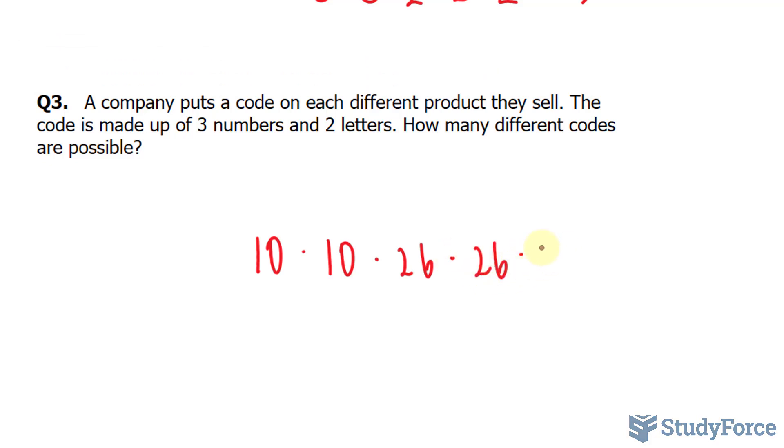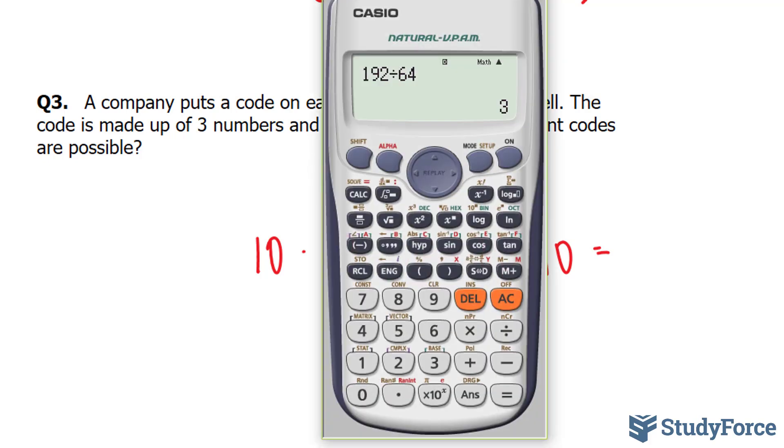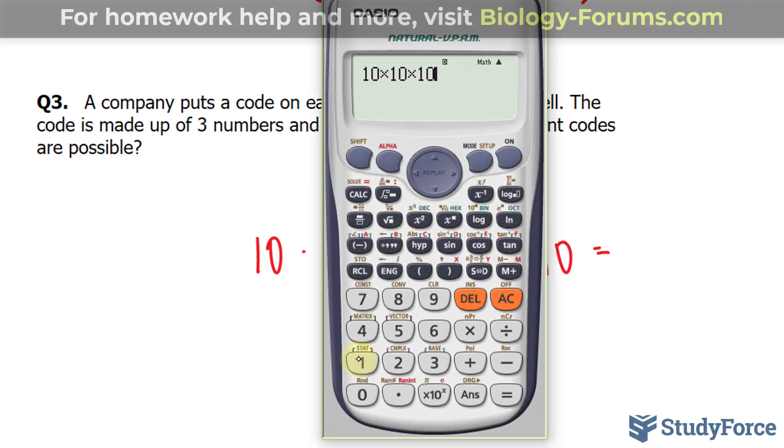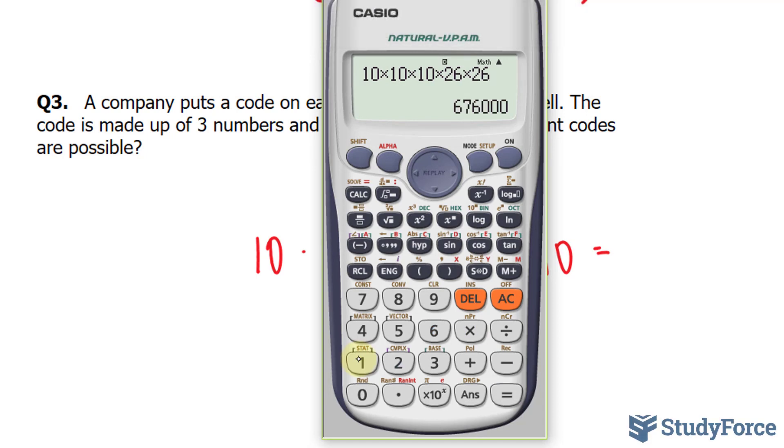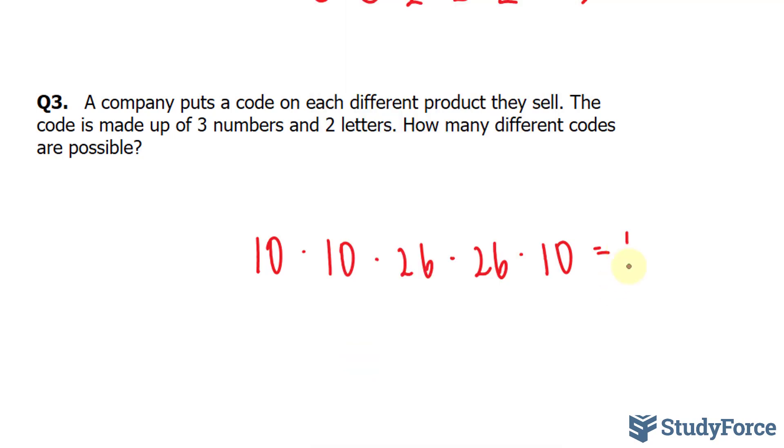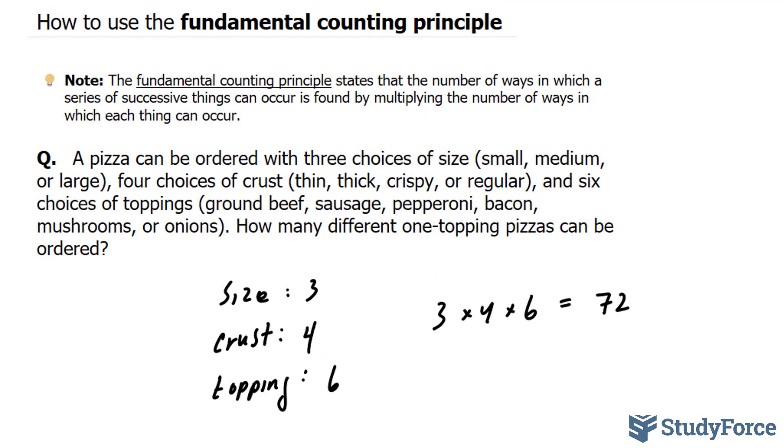And another number, the last one, would be 10. So if we multiply this number out, 10 times 10 times 10 times 26, and another 26, we end up with 676,000 different combinations. And there you have it. Three examples on how to use the fundamental counting principle.